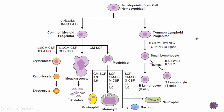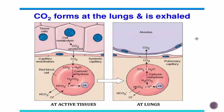The function of carbonic anhydrase: at the active tissues, the cell releases carbon dioxide as a byproduct. This is taken up by the RBCs and, with carbonic anhydrase, becomes bicarbonate, then carbonic acid, which is excreted in exchange for the chloride ion. Once the RBC reaches the lung capillaries, the carbonic acid is converted back to carbon dioxide and released to the lungs, then exhaled.